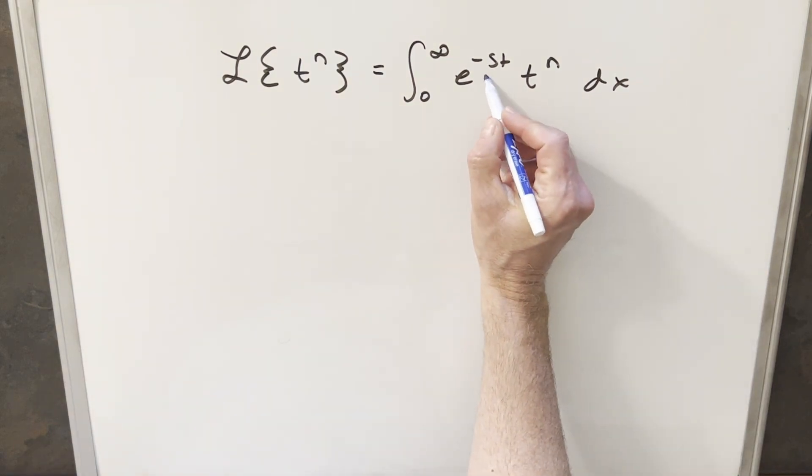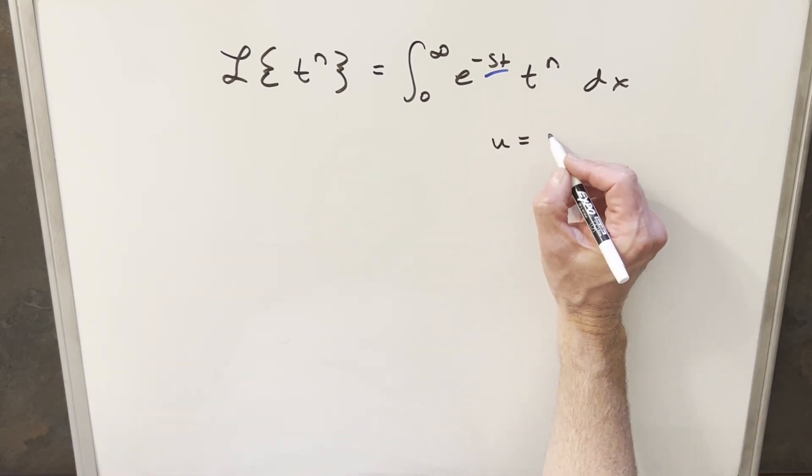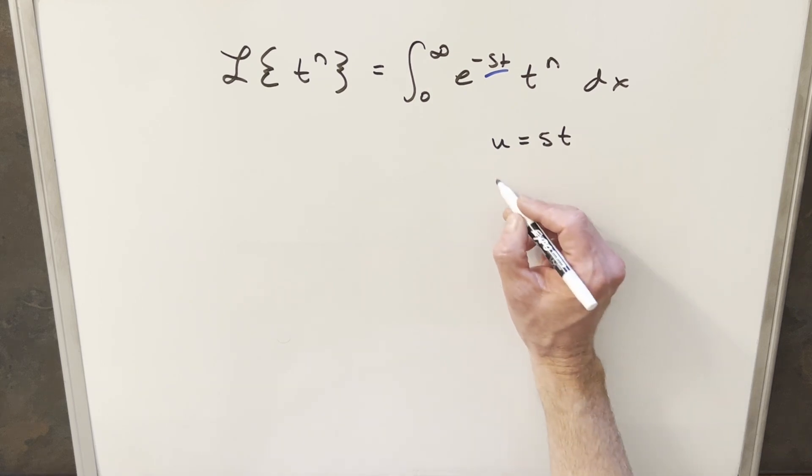Okay, so to get started with this, we're just going to look at this exponent here on the exponential, and I'm going to do a u substitution to try to simplify this. I'm going to make my u equal to just st, not including the minus sign.